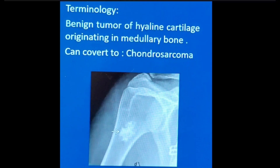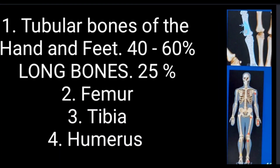One important point is that enchondroma can convert to chondrosarcoma, so it must be kept in mind that it can progress to a cancerous condition. Regarding location, it is usually seen in the tubular bones of the hand and feet in 40 to 65 percent of cases. It also involves long bones in up to 25 percent of cases — particularly the femur and tibia, in metaphyseal or diaphyseal location — and the humerus comes next.